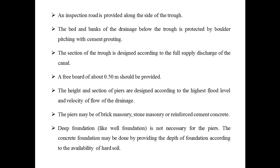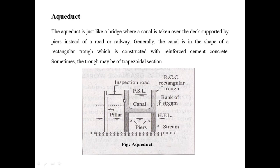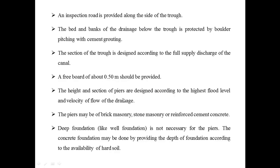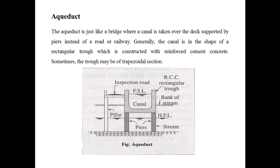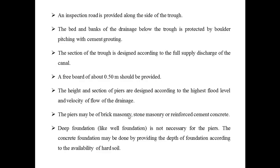An inspection road is provided along the side of the trough for inspection purposes. The bed and banks of the drainage below the trough are protected by boulder pitching with cement grouting. The section of the trough is designed according to the full supply discharge of the canal, and a freeboard of about 0.5 meters should be provided for safety. The height of the piers is designed according to the highest flood level and velocity of flow of the drainage. The piers may be of plain masonry, stone masonry, or reinforced cement concrete. Deep foundation like well foundation is not necessary; a concrete foundation may be done by providing depth according to the availability of hard soil.